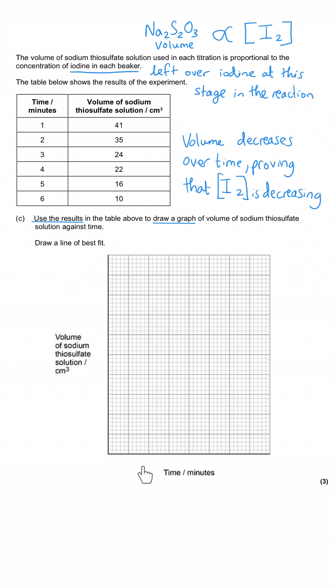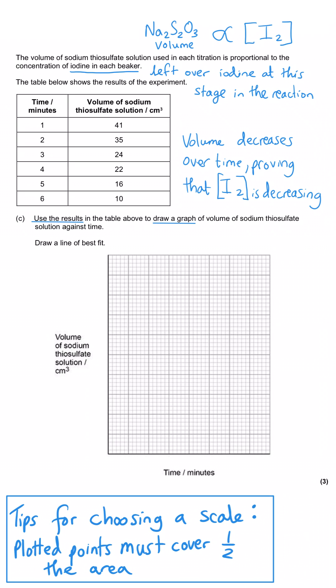There's no scale on this graph currently, so our first mark is to decide on a suitable scale. When you draw a graph, you need to make sure the points you'll be plotting take up at least half of the grid—both the x-axis and y-axis. The volume goes from 10 at the smallest to 41 as the largest, so we can work our way up five at a time and get to 50 at the top of this scale.